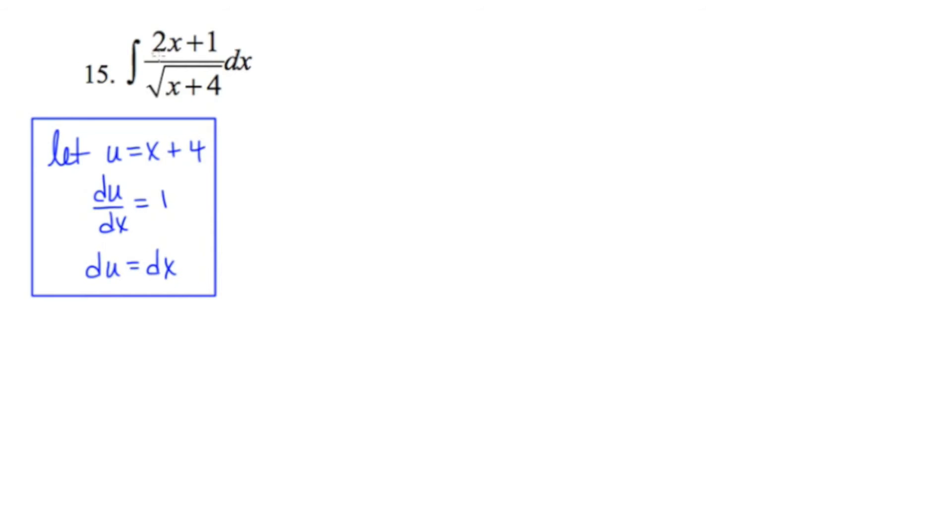Now I notice in my original problem that there's this x that's just floating around. So I'm going to need to come up with an expression for x in terms of u. And I'll use the top equation in the box to do that. If u equals x plus 4, then x equals u minus 4.